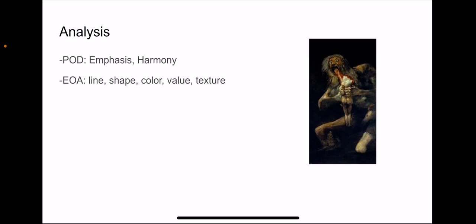The principles of design here are the emphasis on Saturn's son, the individual who is being devoured, and the harmony provided with the dark background. You can always see line within the artwork. Line and color in my opinion are really what creates shape. You can see the texture of the human skin on Saturn—it's very dry and draped on his bones compared to the body he's devouring, which seems to be younger and healthier.